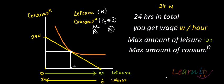If the optimal leisure is L, then labor is defined as 24 minus L. This is the way you model labor and leisure. This is the labor-leisure trade-off, and in the next video we're going to talk about the substitution effect and income effects in the labor-leisure choice model.